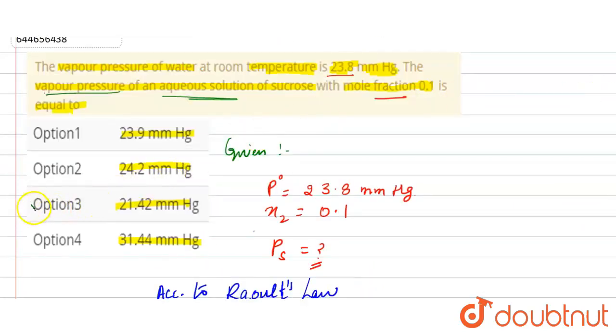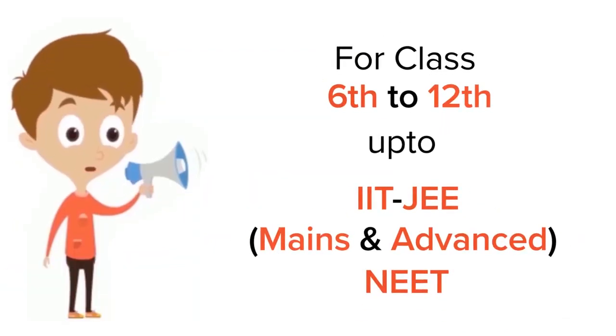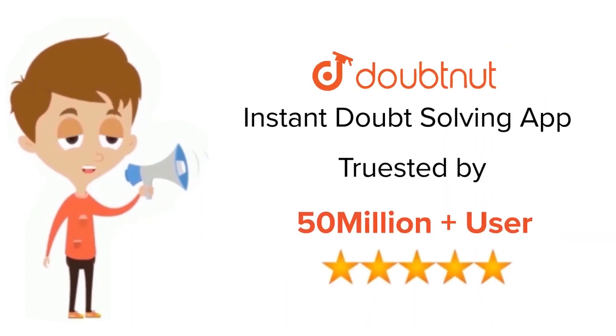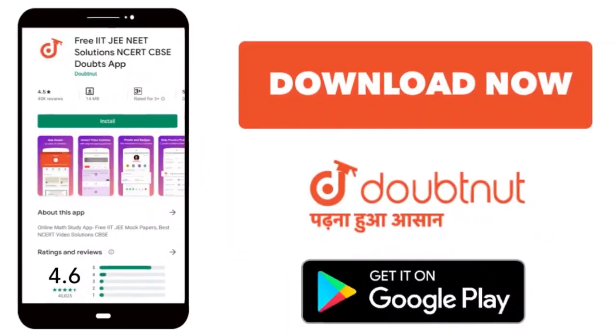So option 3 is correct. Thank you! For classes 6 to 12, up to IIT-JEE and NEET level. Trusted by more than 5 crore students. Download Doubtnet today.